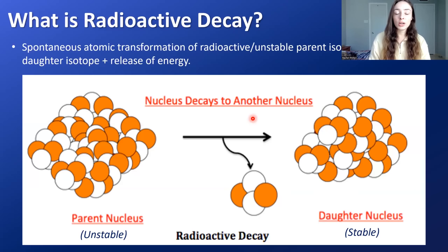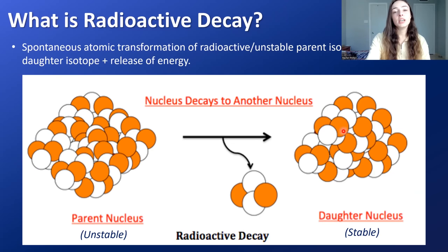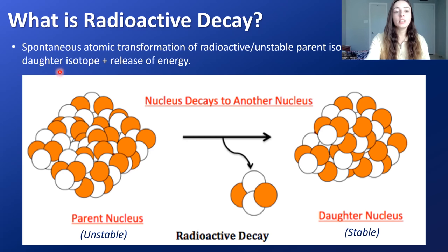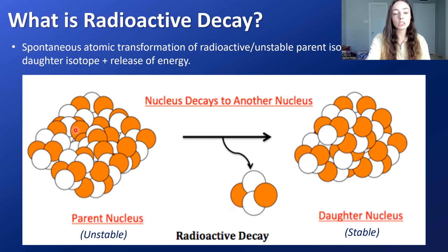Let's talk about radioactive decay and its applications. Radioactive decay is the spontaneous nuclear transformation of an unstable parent isotope into a stable daughter isotope. During this decay process, there's a release of energy — in this case, two neutrons and two protons being released from the nucleus as an alpha particle to become more stable.